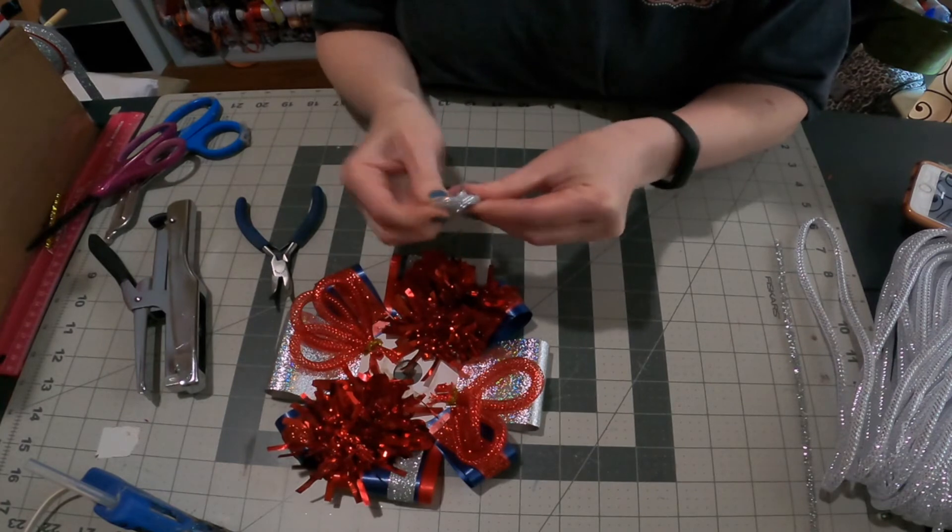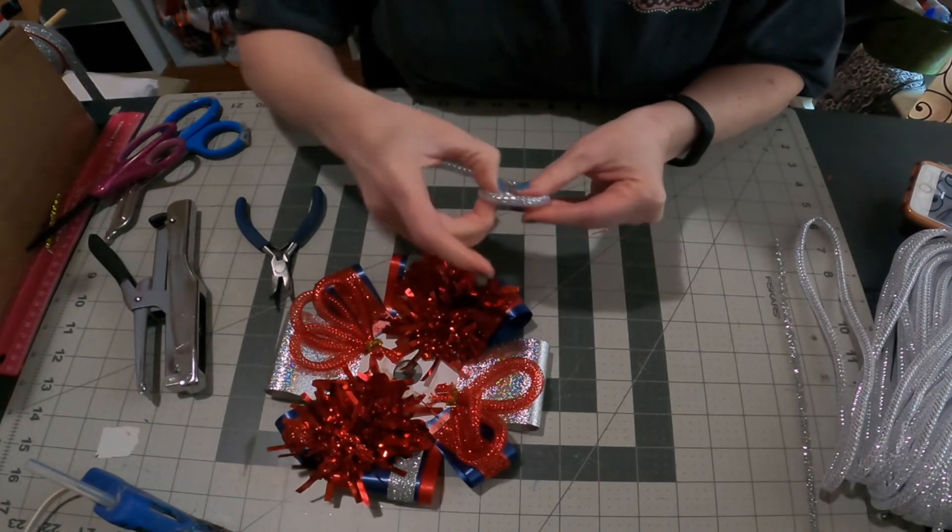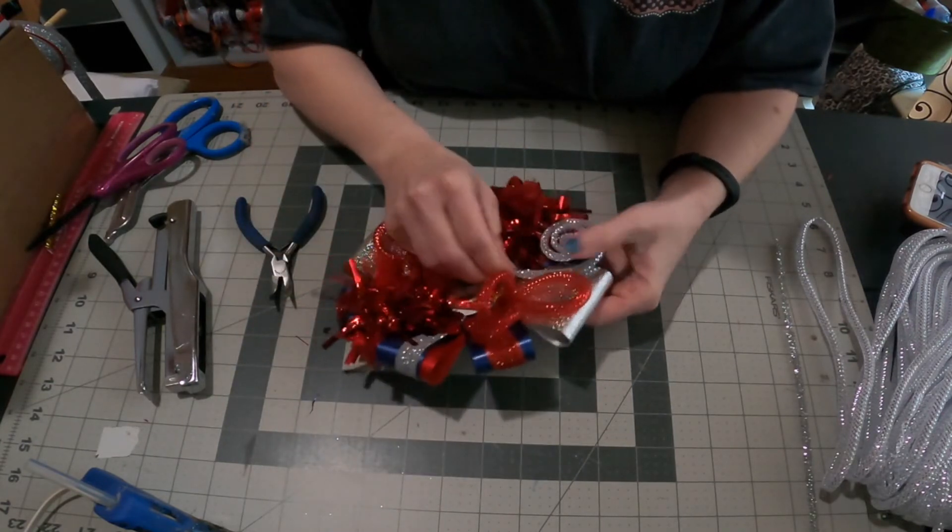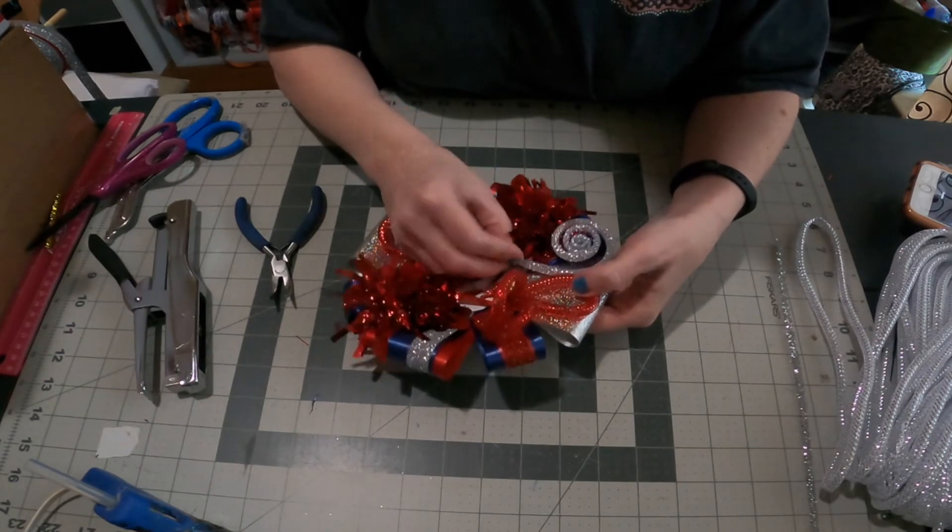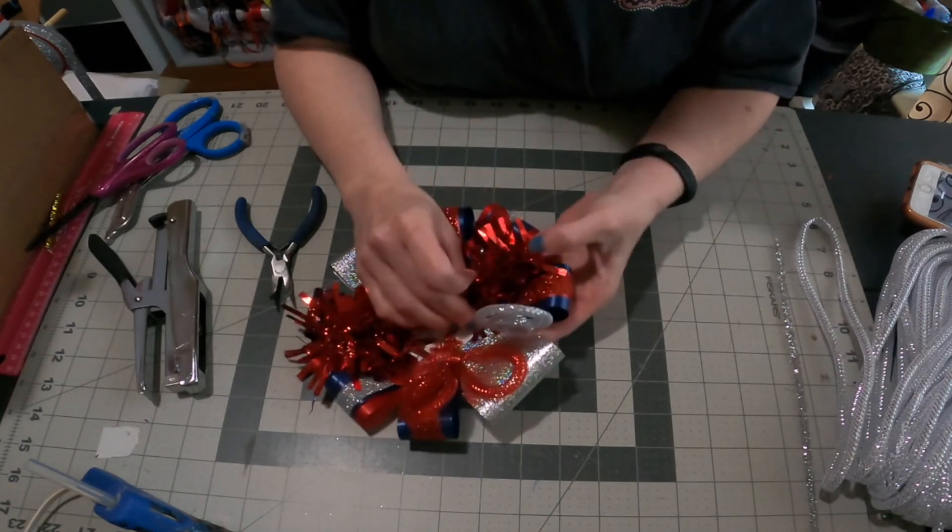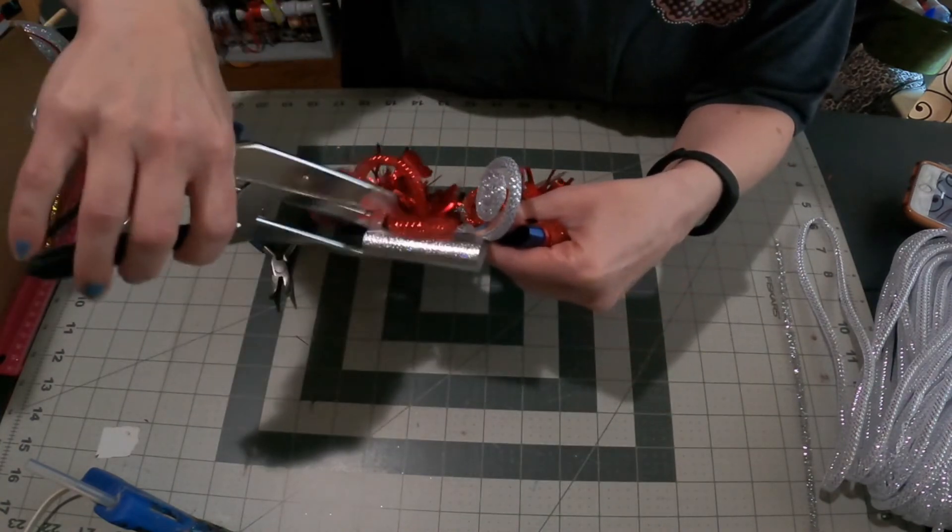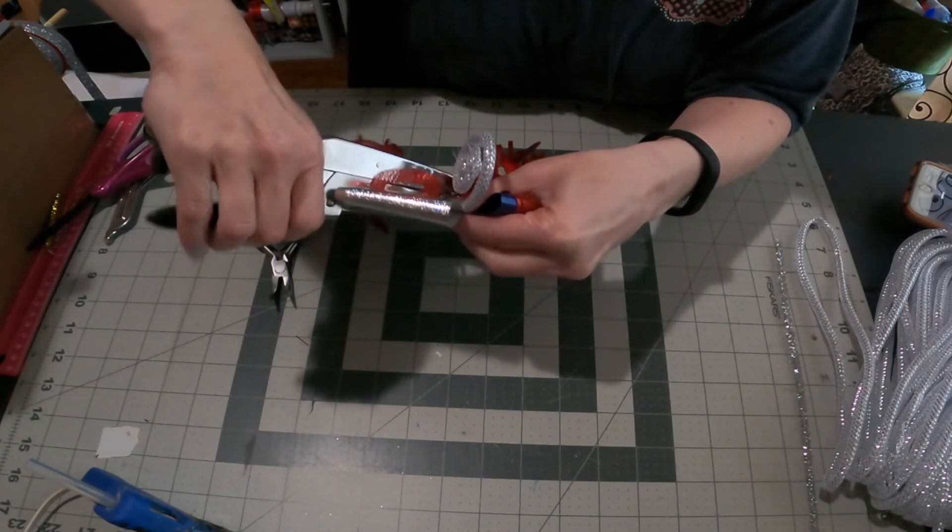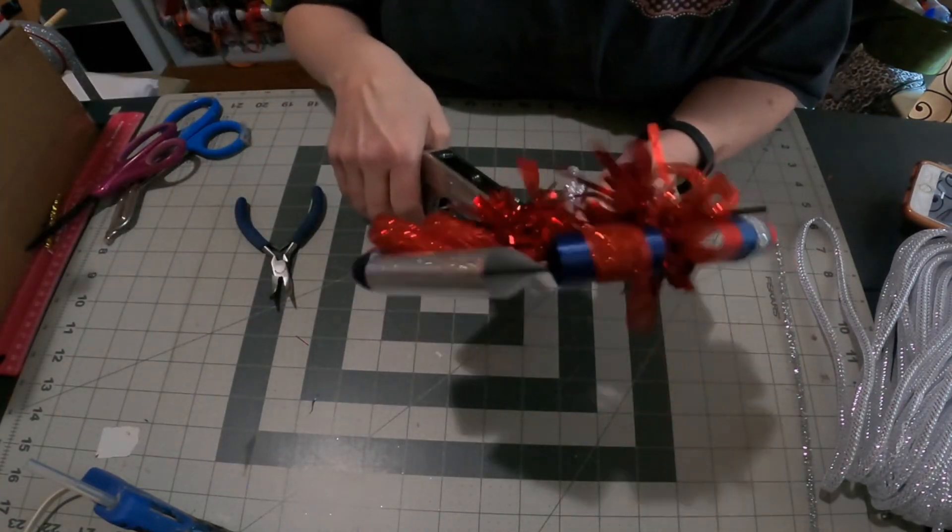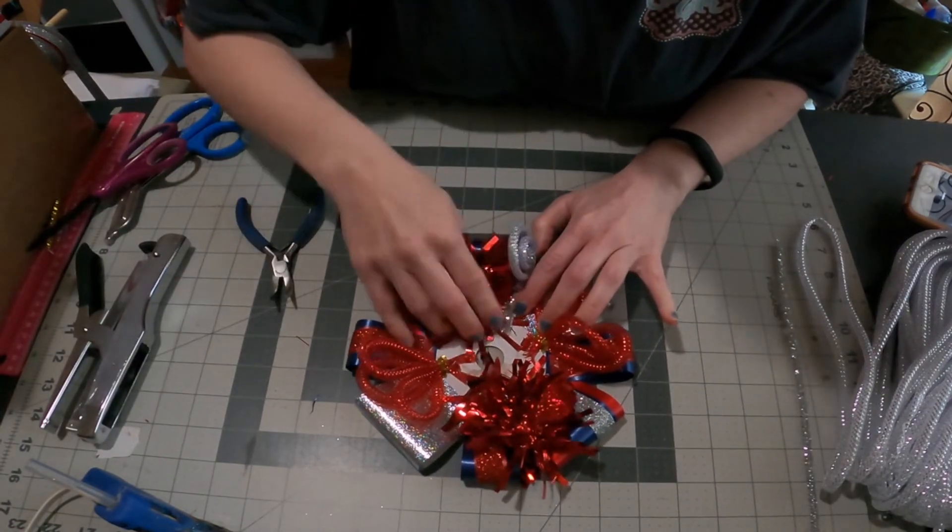And then just keep rolling and rolling until you get almost to the end. And now I'm going to do a little something different. You've probably seen this, but normally I attach these flat like that. But on this one I moved it so it is sticking up. So the little swirl is sticking up. I don't think I've done that before. So just changing the position of it will give it a different look.